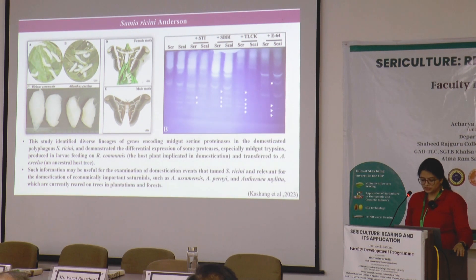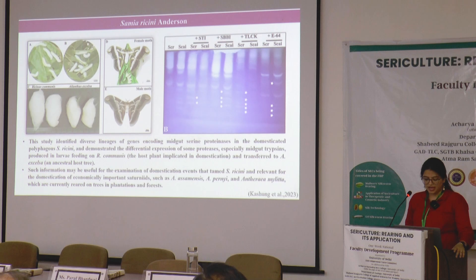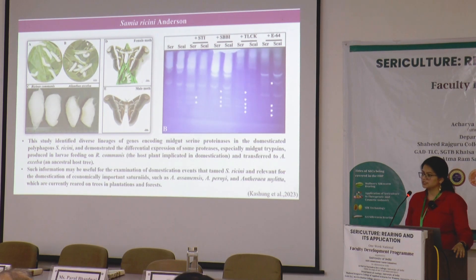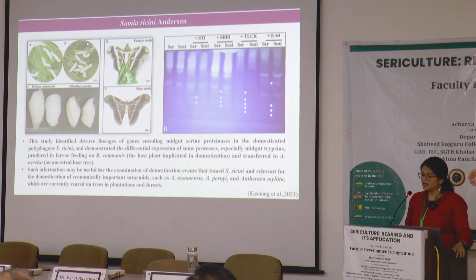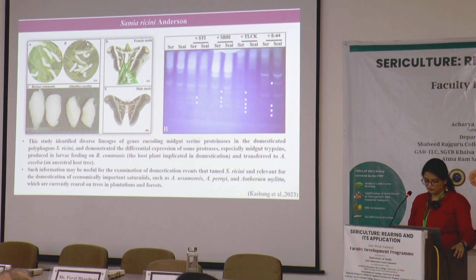Such information may be useful for examination of domestication events that tamed Samia ricini, and is relevant for the domestication of economically important saturniids such as Muga, Antheria perine, and Antheria mylita, which are currently reared on trees in plantations and forests.